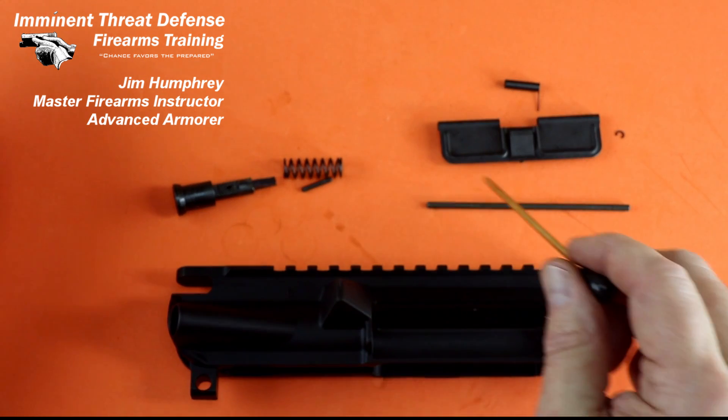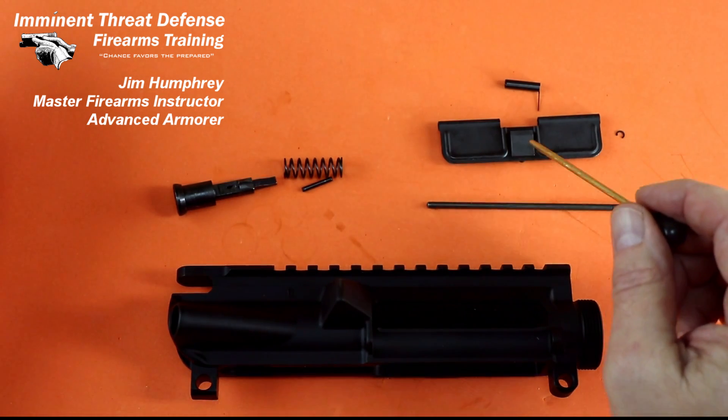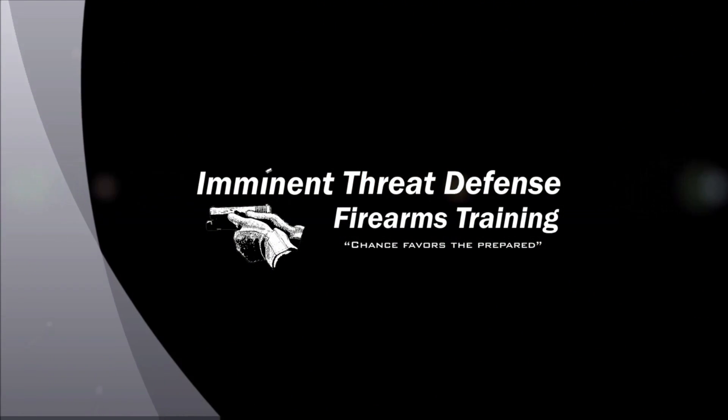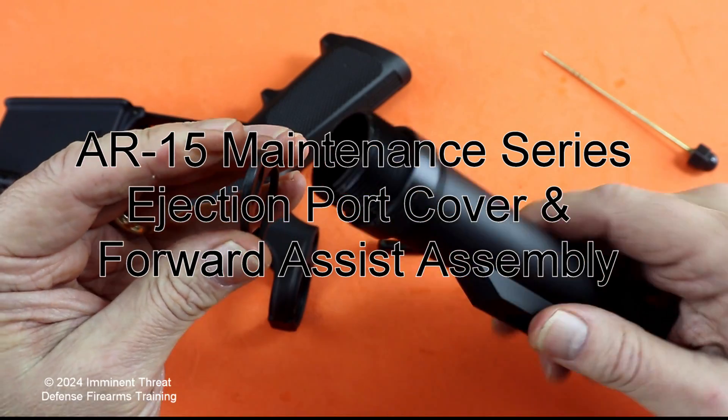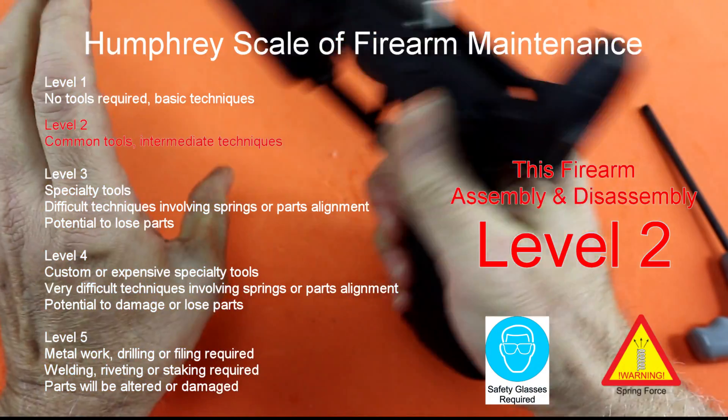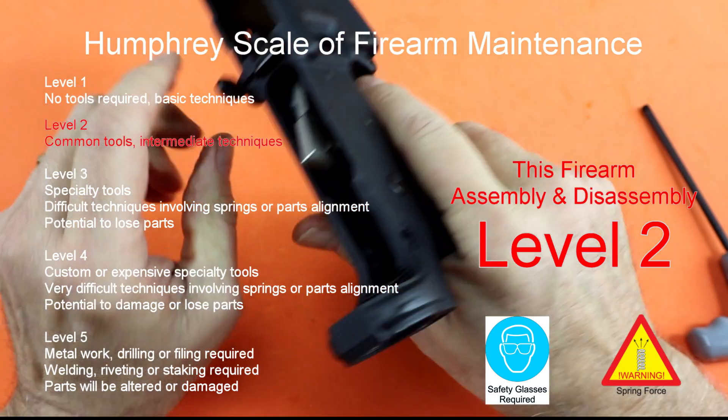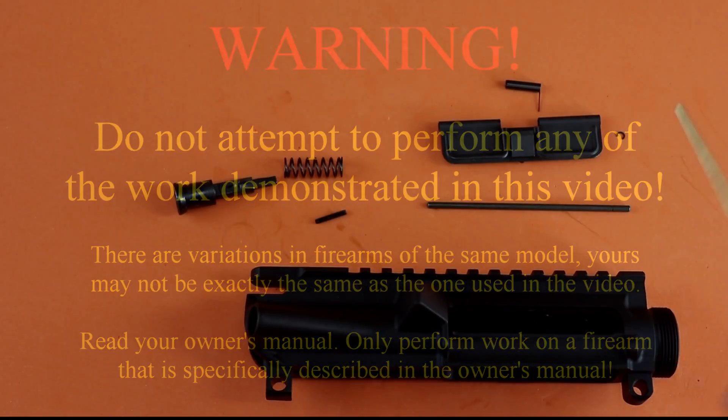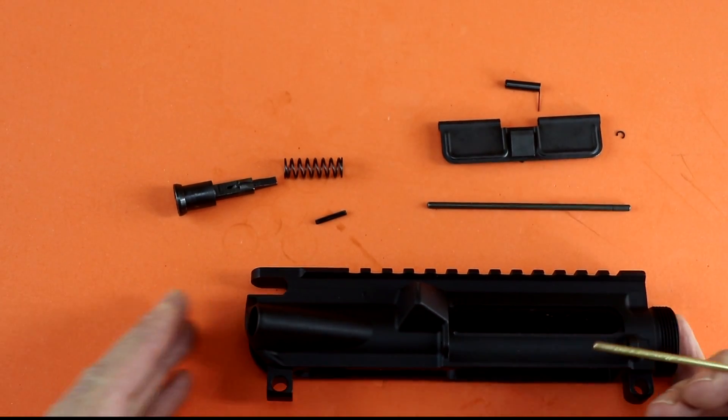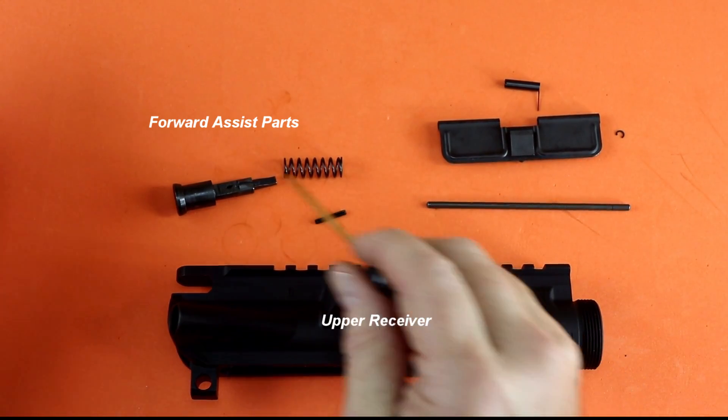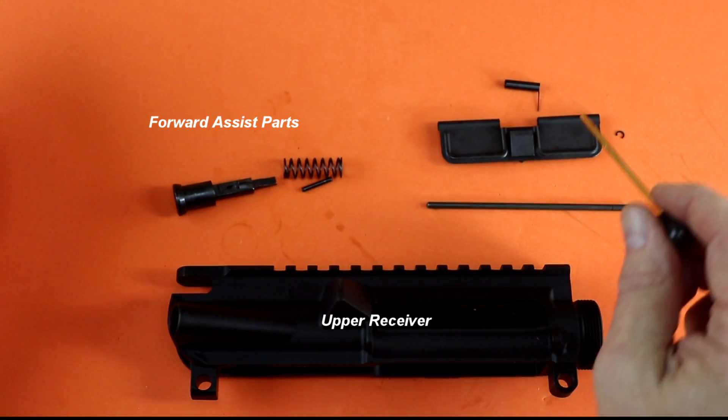Let me show you how I installed this forward assist and this dust cover. So after maintenance on the upper receiver, I'm going to reinstall this forward assist and the ejection port cover.